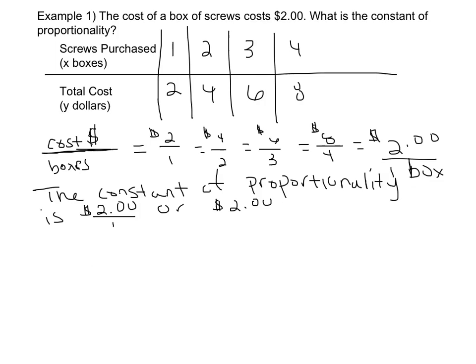Using the equation that was given to us at the beginning of the video, y equals kx, we could go ahead and write an equation that would relate the cost in dollars to the boxes of screws purchased. Since we know that k now, or constant of proportionality, is $2, we can go ahead and write y equals $2 times the number of boxes, or y equals 2x.